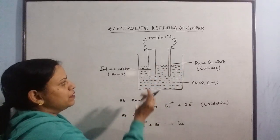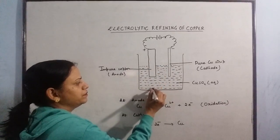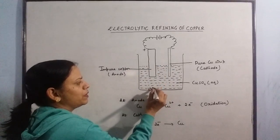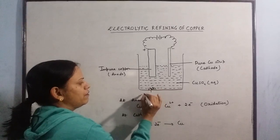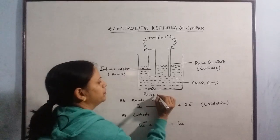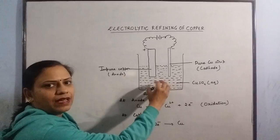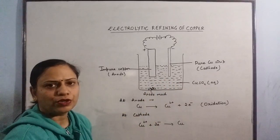The impurities that are present in this rod will either fall down over here, the insoluble impurities, they will fall down over here. We call it the anode mud because they are coming out of the anode and the soluble impurities go in solution and get dissolved in this solution.